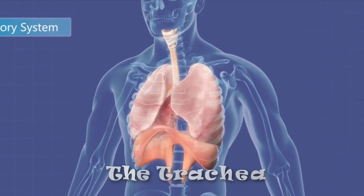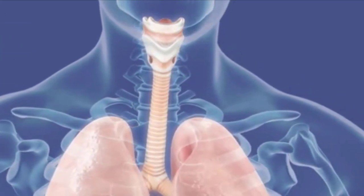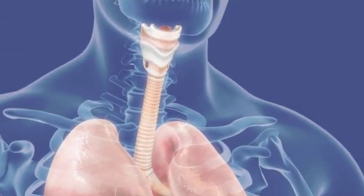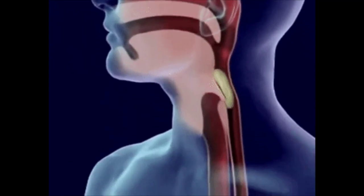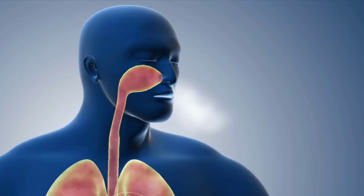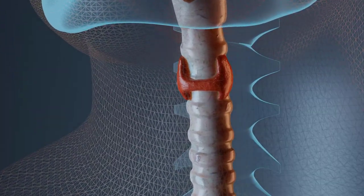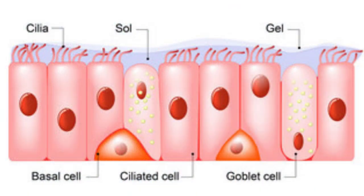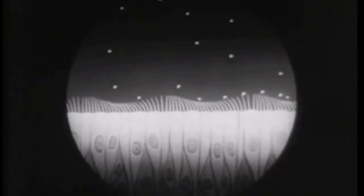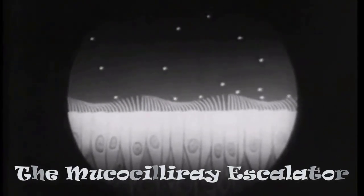The trachea, or windpipe, is anterior to the esophagus and is supported by 16 to 20 C-shaped cartilaginous rings. The open part of the cartilaginous rings faces posteriorly, where it is spanned by a smooth muscle called the trachealis. This gap in the cartilage allows room for the esophagus to expand as swallowed food passes by. The trachealis contracts or relaxes to adjust air flow. The inner lining of the trachea is a pseudo-stratified columnar epithelium, composed mainly of mucus-secreting goblet cells, ciliated cells, and short basal stem cells. The mucus traps inhaled particles, and the upward beating of the cilia drives the debris-laden mucus toward the pharynx, where it is then swallowed and eliminated from the body. This mechanism of debris removal is called the mucociliary escalator.